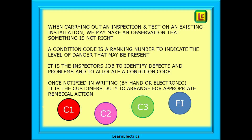Let's establish a starting point. When carrying out an inspection and test on an existing installation, we may make an observation that something is not right. A condition code is a ranking number to indicate the level of danger that may be present with that particular observation. It is the inspector's job to identify defects and problems and to allocate a condition code. It is not the inspector's job to repair it — inspecting is not repairing, although you may be asked to quote separately for the repairs.